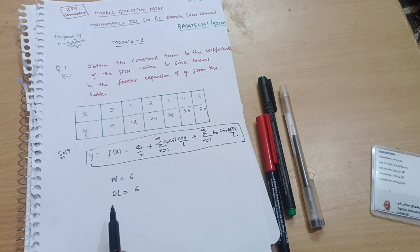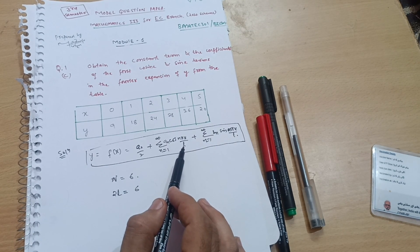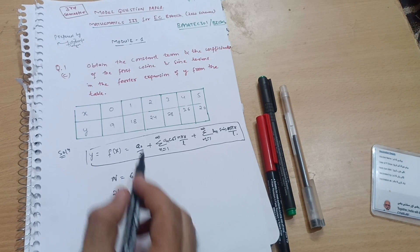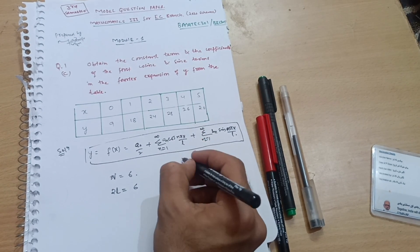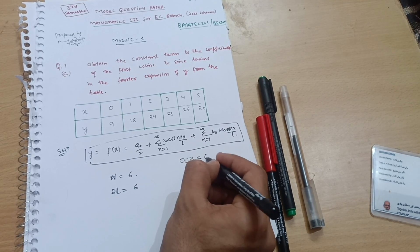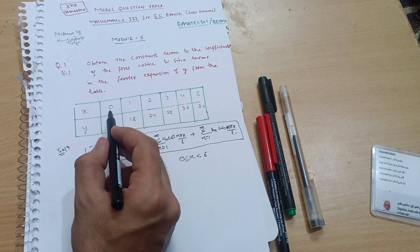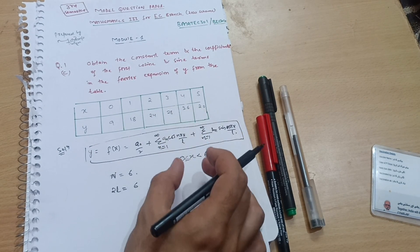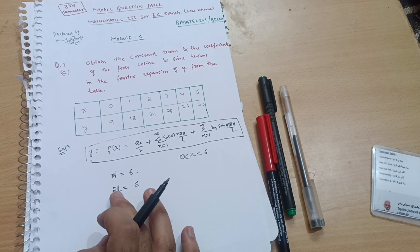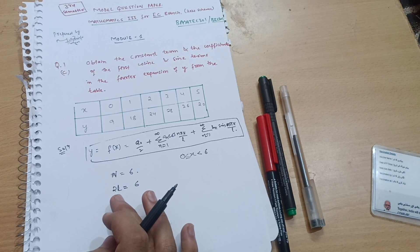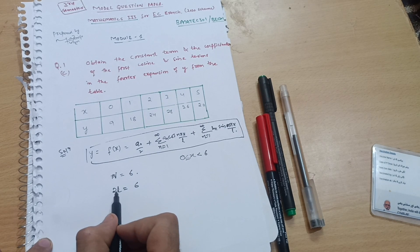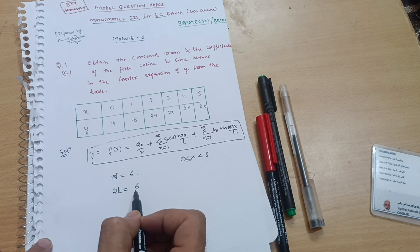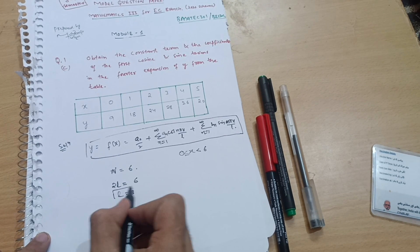In this question there are 6 terms, so n = 6. I also need the value of l. I can compare the equation: 2l equals the length interval, which is 6, since x ranges from 0 to less than 6 (i.e., up to 5). So 2l = 6. If the period is not mentioned in the question as 2π, you can directly take 2l equal to this length interval of 6. Therefore l = 6/2 = 3.